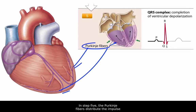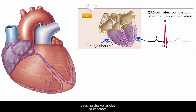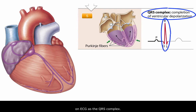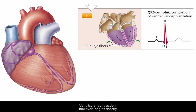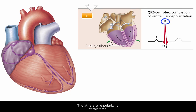In step five, the Purkinje fibers distribute the impulse throughout the ventricular myocardium, causing the ventricles to contract. We can see this ventricular depolarization on an ECG as the QRS complex. Ventricular contraction, however, begins shortly after the peak of the R wave. The atria are repolarizing at this time, but the repolarization is masked by the QRS complex.